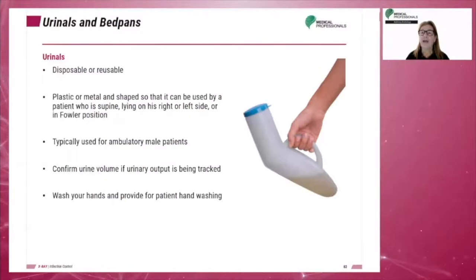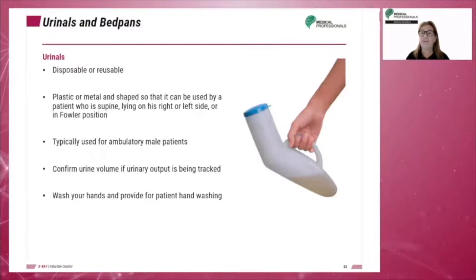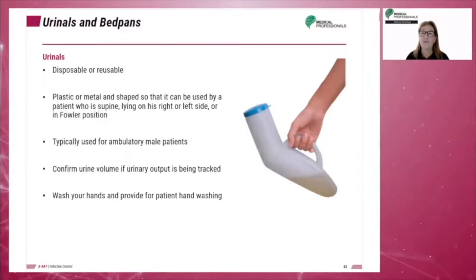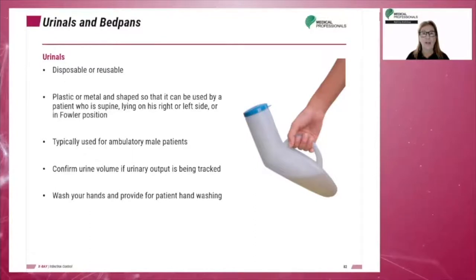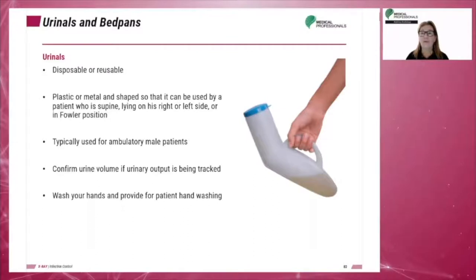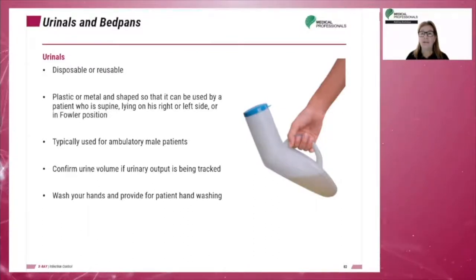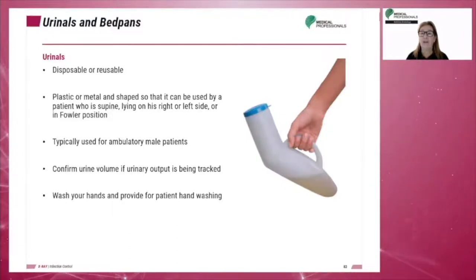Urinals are plastic or metal containers used for portable urination. They are used for male patients and can be disposable or reusable. The male urinal is shaped so that it can be used by a patient who is supine, lying on his right or left side, or in the Fowler's position. If urine output is being tracked, the technologist should confirm the urine volume after the patient urinates.